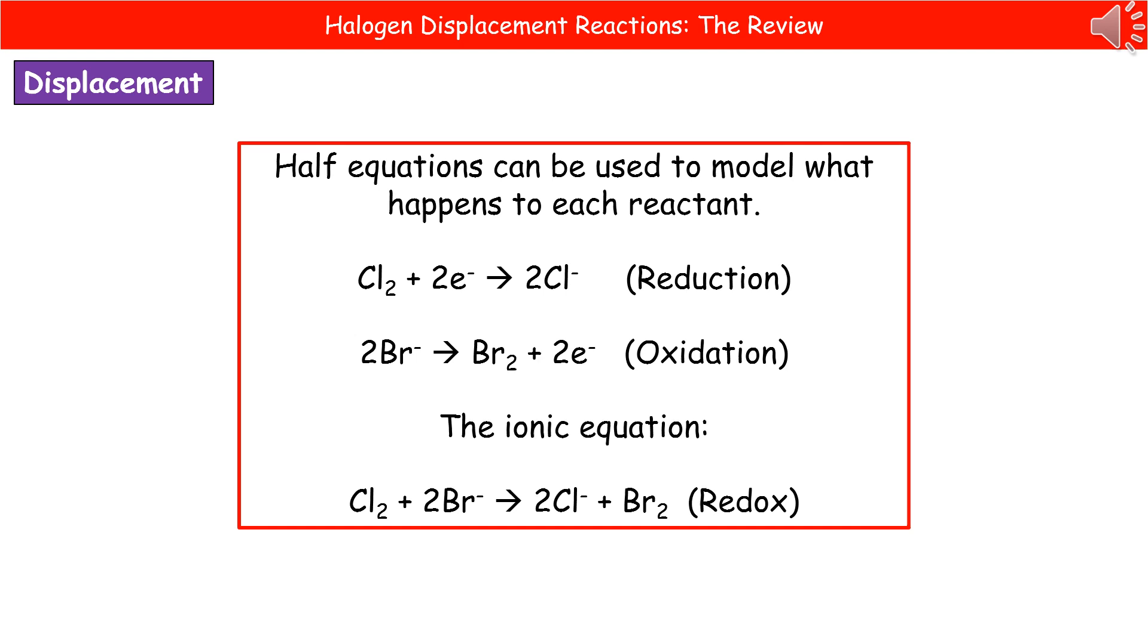Then the other side to this, what's happening to our bromine? We start off with our bromide ions, so 2Br-, and then what we're going to form is bromine, so Br2, and we get two electrons, 2e-.